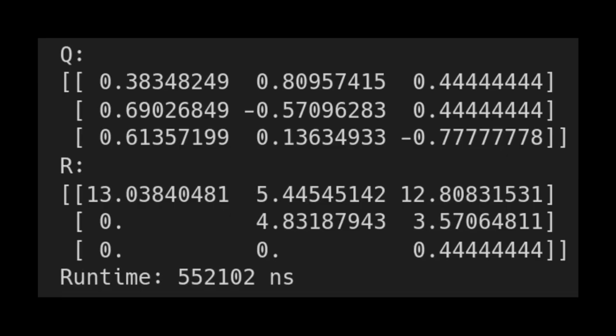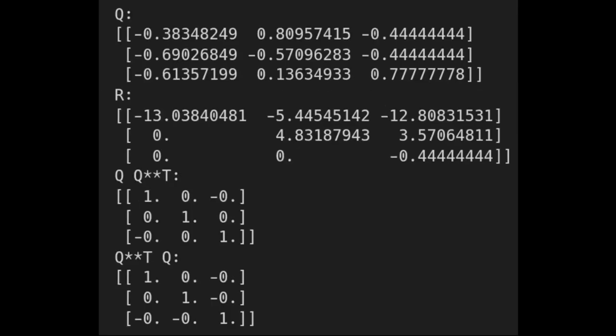All right, this is the result that we end up getting. You can see I'm computing a runtime and we're going to compare the runtimes using each one of these methods. But you can see that our R matrix is clearly upper triangular and we're not going to compute Q transpose by Q or Q by Q transpose, but we can compare it to the results from before using the numpy linalg qr function.